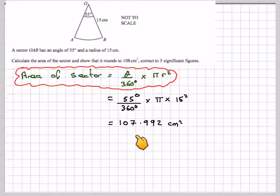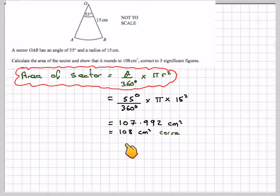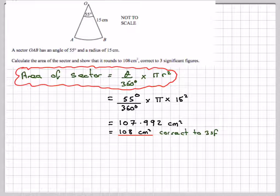Working out on my calculator, I get 107.992 centimetres squared. Rounding off, I get 108 centimetres squared as required by the question. However, remember to use this one if you're going to use it in another part of the question.